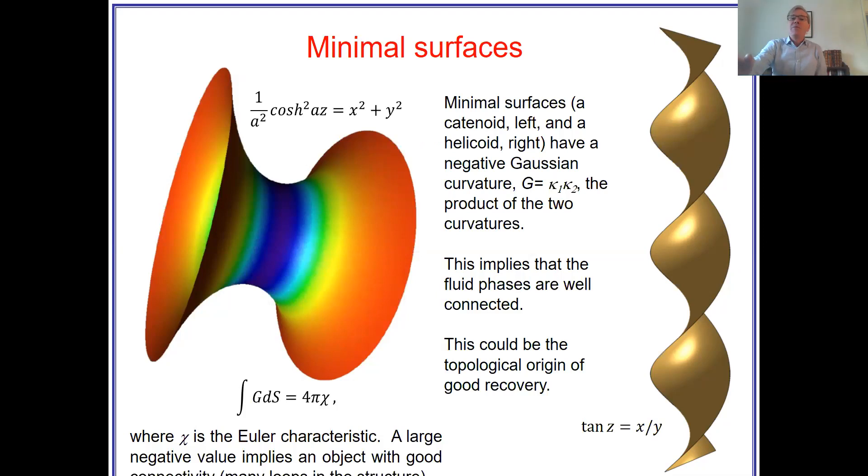What does it mean? Well, this integral here is the integral of the Gaussian curvature over a surface. And it's proportional to what's called the Euler characteristic. The Euler characteristic is a topological description of a shape. It essentially gives you the number of redundant loops in the structure. So, something with a large negative Euler characteristic is something with lots of loops, something that's very well-connected. And so, the implication is, and we're still working on this, the implication is we have mixed wet systems. So, we put oil into a rock. The wettability changes. Now, we inject water.